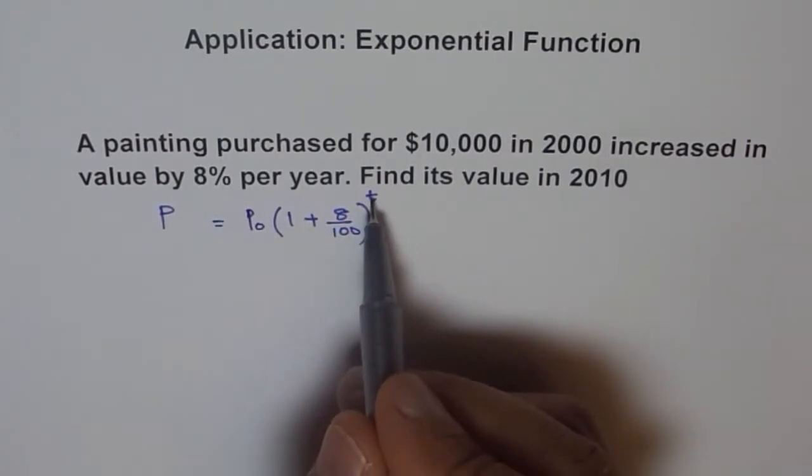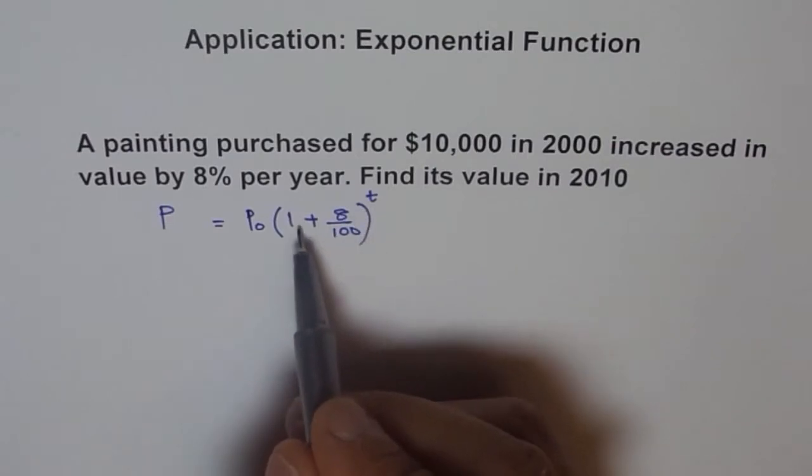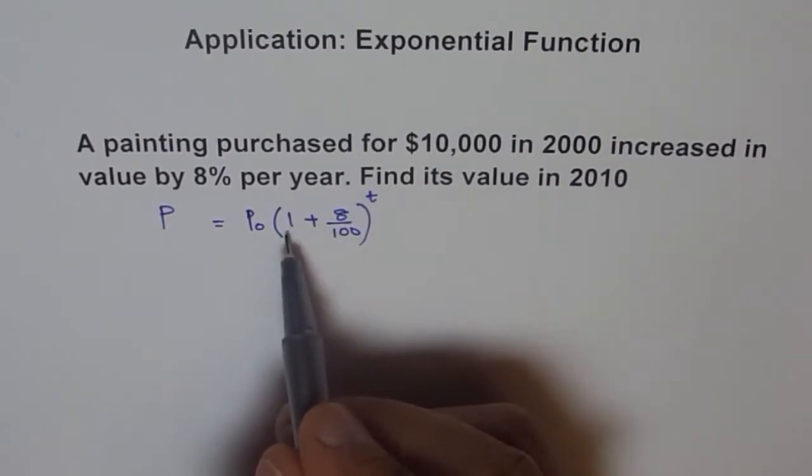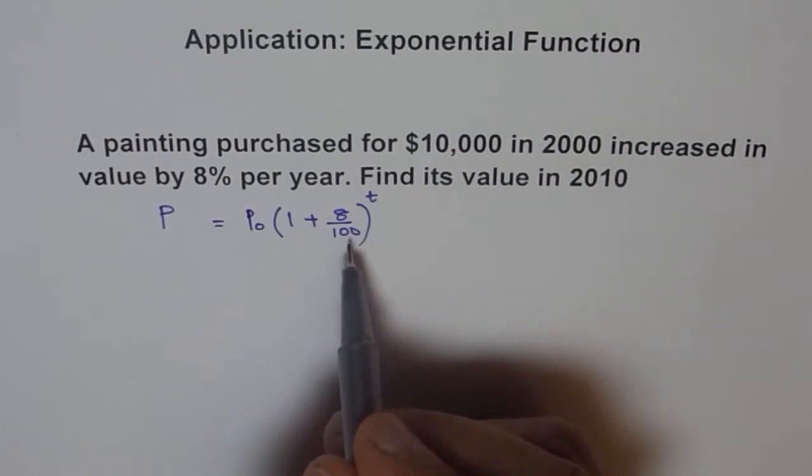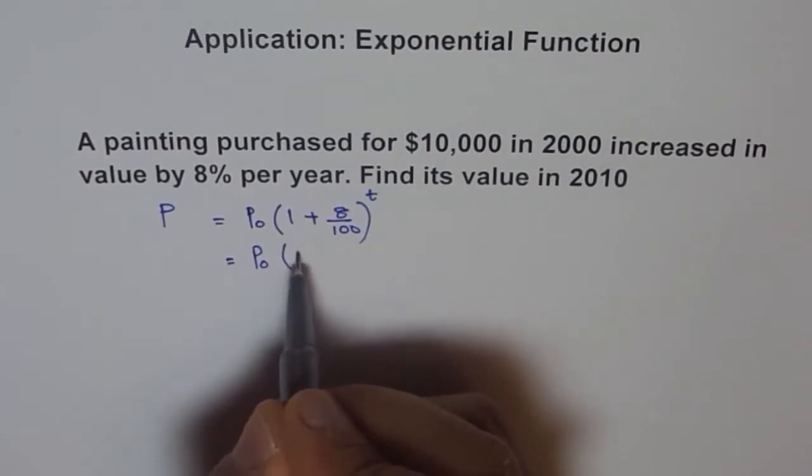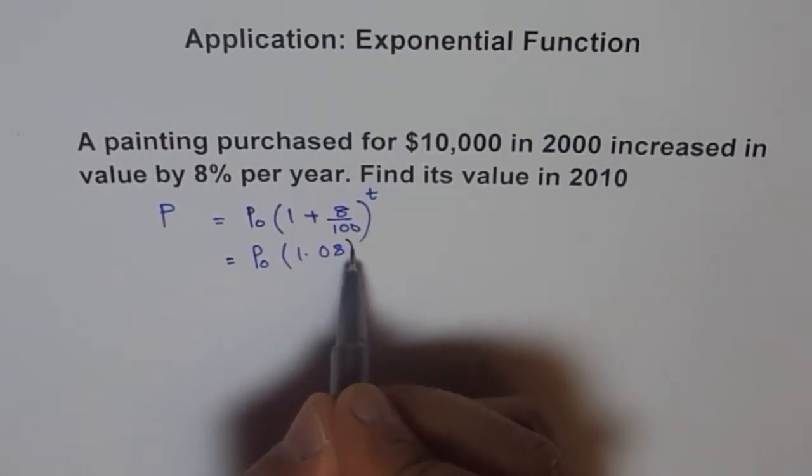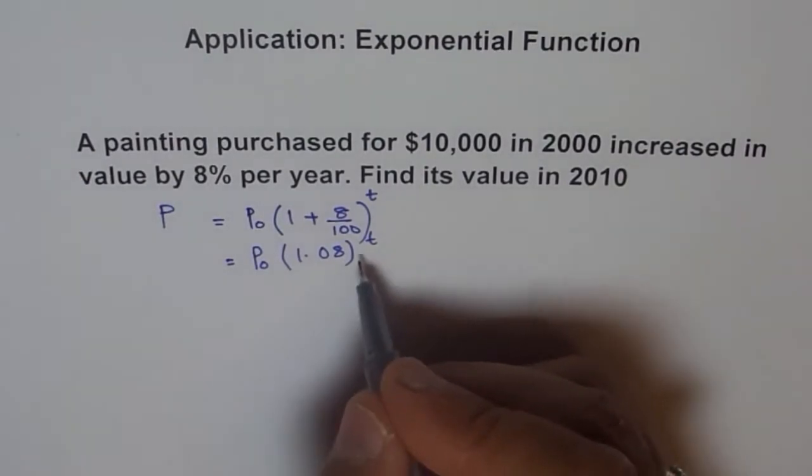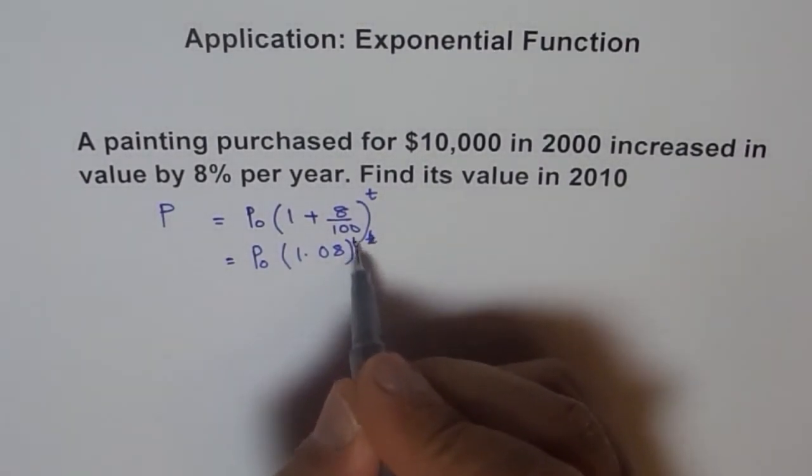Now T is per year. So in one year it will be like 8% more. In the second year it will be again 1.8%. So this could be written as P0 into 1.08 to the power of T. This T should be closer. Let me write here to the power of T.